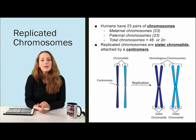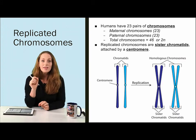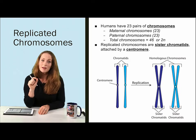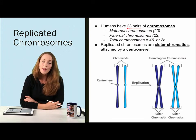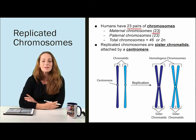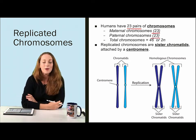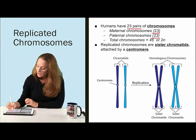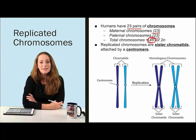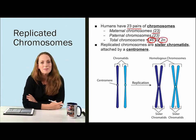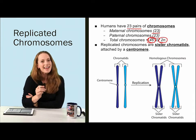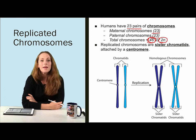Now we have replicated chromosomes. Some terminology before we talk about how we separate those replicated chromosomes during mitosis. Humans have 23 pairs of chromosomes — one set from mother, the maternal chromosomes, and one set from father, the paternal chromosomes. Put those together, 23 of each, and you have a total of 46 chromosomes in each somatic body cell. That means you have a pair of each type of chromosome, making the cell 2N because you have two sets of each type — one set from mom and one set from dad.